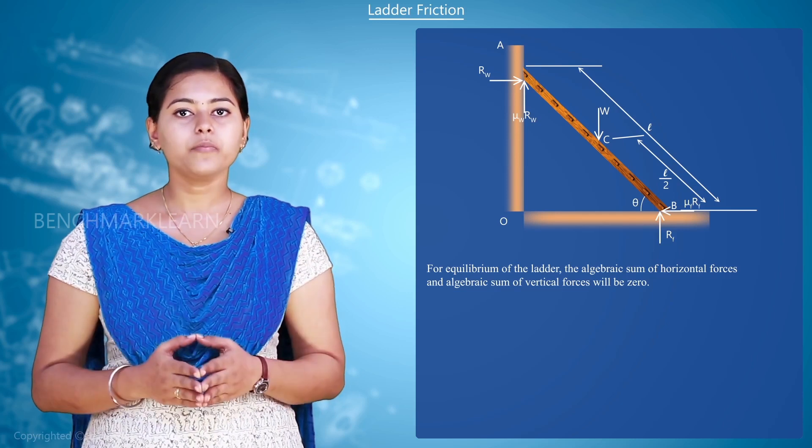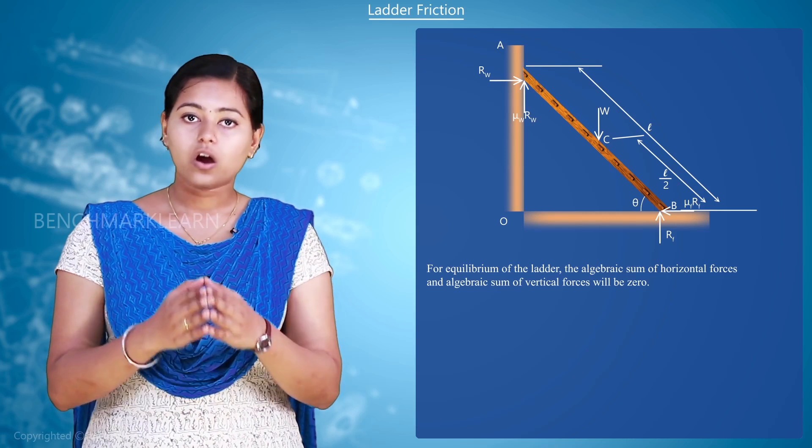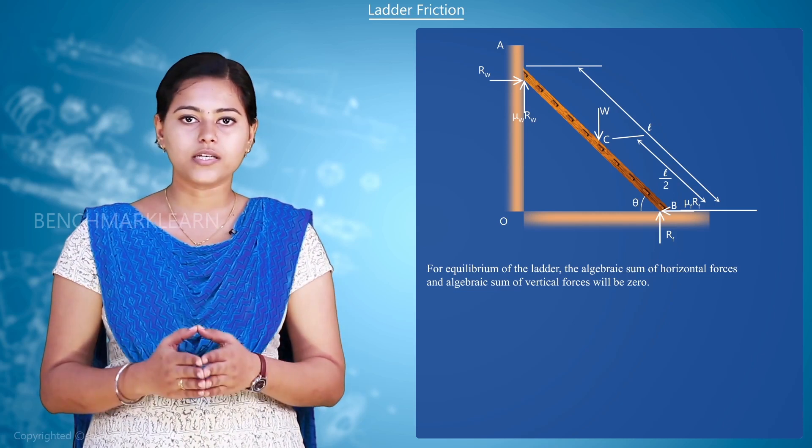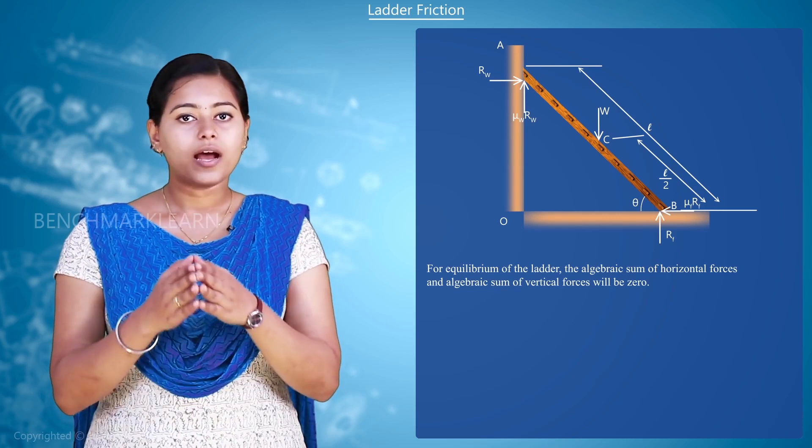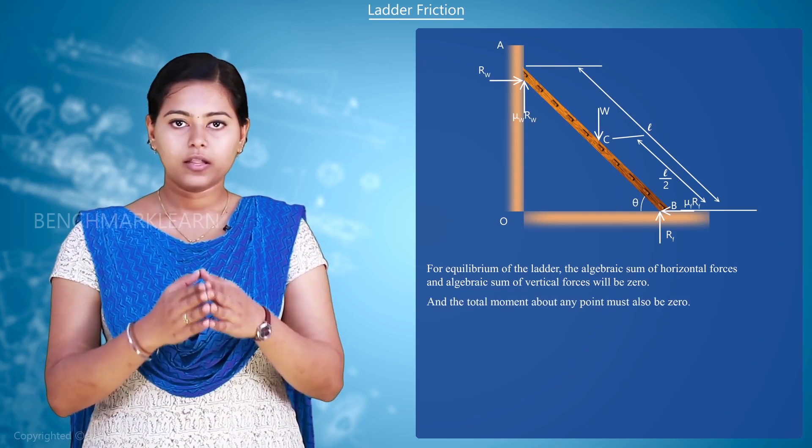For equilibrium of the ladder, the algebraic sum of horizontal forces and algebraic sum of vertical forces will be equal to 0. And the total moment about any point must also be 0.